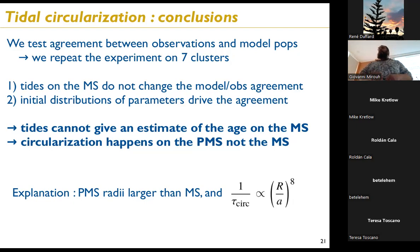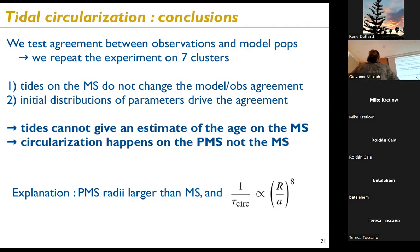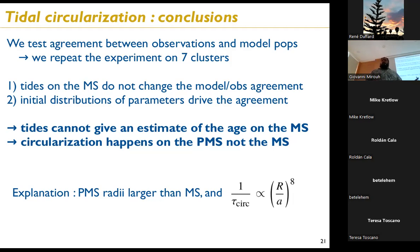Tides are also more important again during the red giant branch, when stars grow large again. The stellar radius is the dominant factor in tidal efficiency, more than the E2 or E parameters themselves. So what you really want to track is the stellar radius rather than the tidal factor multiplier.